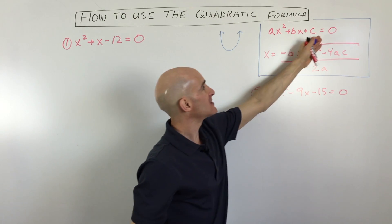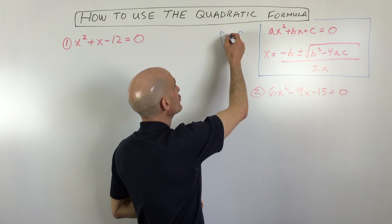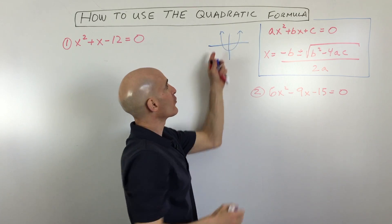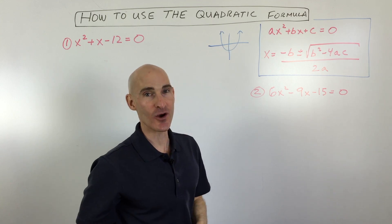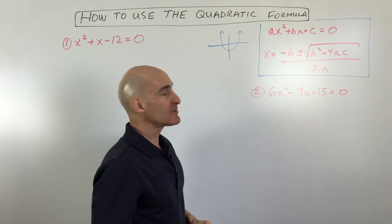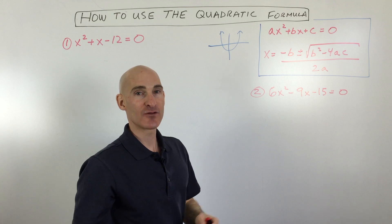And what we're doing when you set this equal to zero is you're actually looking at where the graph crosses the x-axis. That's where the y-coordinate is equal to zero. So sometimes when you solve these problems, there's a lot of different ways to do it.